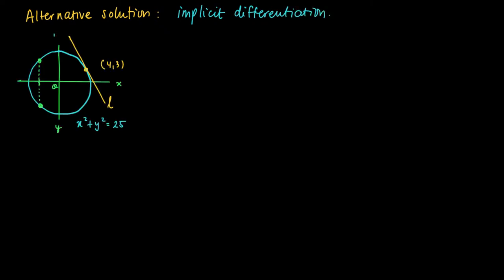Here we look at the same problem and we're going to use the technique of implicit differentiation. We're looking at the equation x squared plus y squared equals 25, and locally for x close enough to 4 and y close enough to 3,